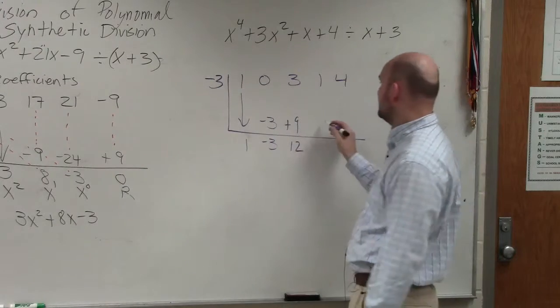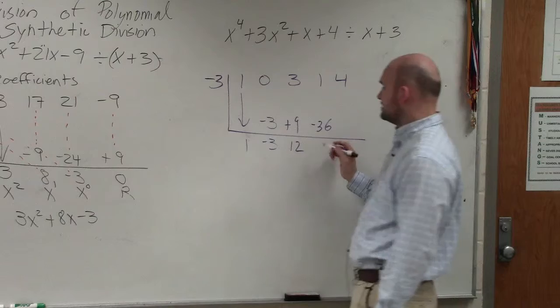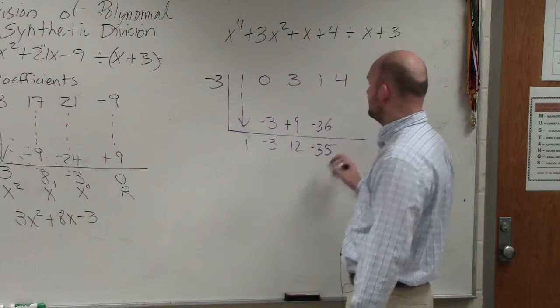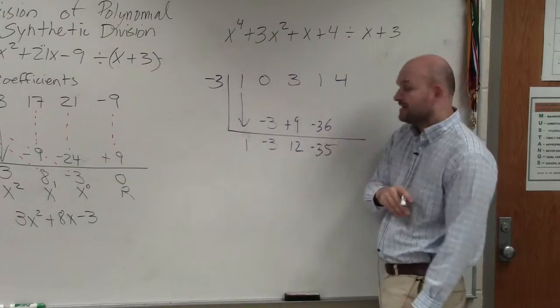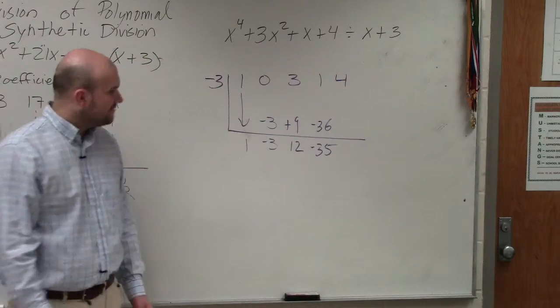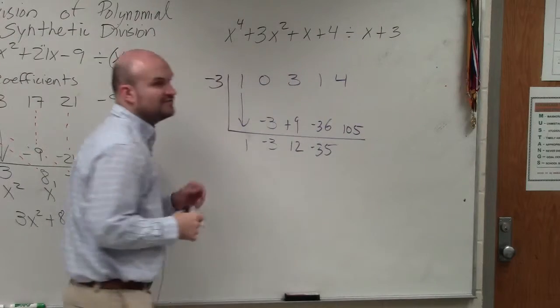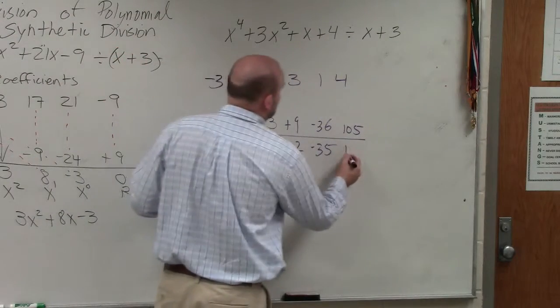12 times negative 3 is negative 36. 1 plus negative 36 is negative 35. Negative 35 times negative 3 is going to be a positive 105. 105 plus 4 is 109.